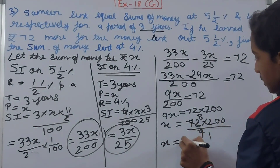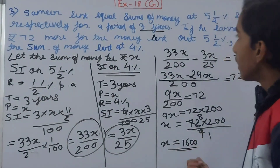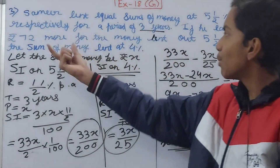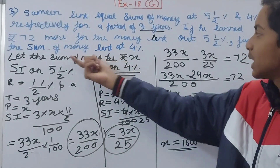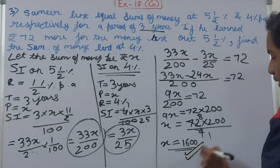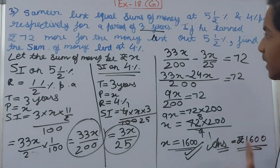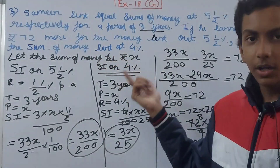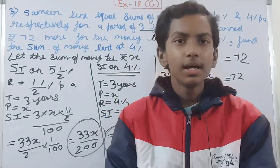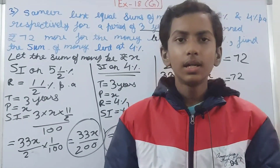So x = ₹1600. Since Samir lent equal sums of money, the sum lent at 4% is ₹1600. If the question asked for the sum at 5½%, the answer would also be ₹1600 because both sums are equal. Friends, this is all for today — do subscribe and leave a like. Take care, bye!